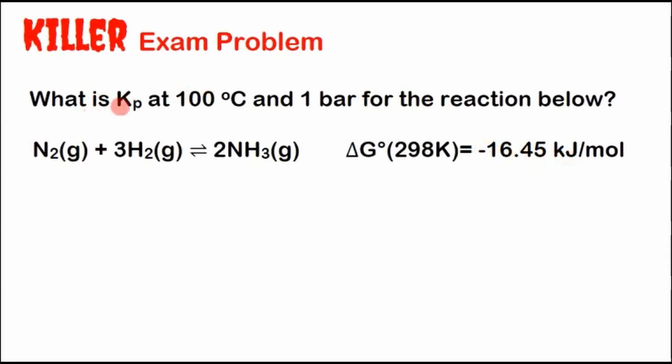The Van't Hoff equation is ln K2 over K1, this is one version of it. This is geared towards a general chemistry class, so we're not using any calculus. It goes delta H over R times 1 over T2 minus 1 over T1. Unfortunately we're not given much other information. We're given temperatures, but we're not given an equilibrium constant, which we normally are, so we need to get it. One of the tricks in this problem is that we need to get the equilibrium constant from the changing Gibbs free energy.